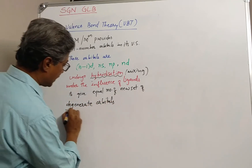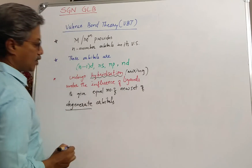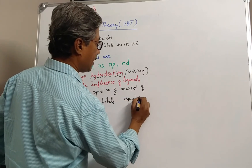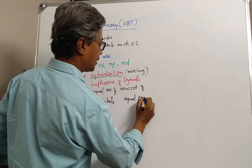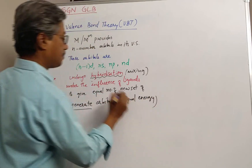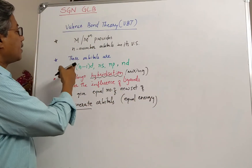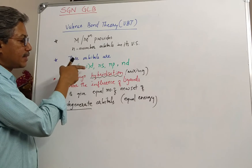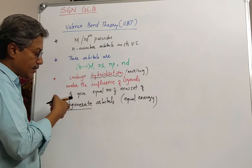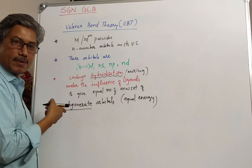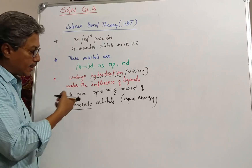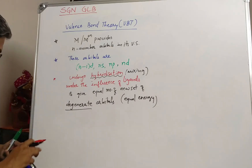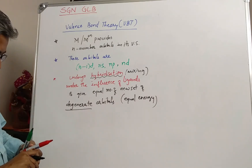Degenerate stands for having equal energy. That means the original orbitals are of different energies, but upon mixing we will get all the orbitals with the same energy, which are called degenerate orbitals.